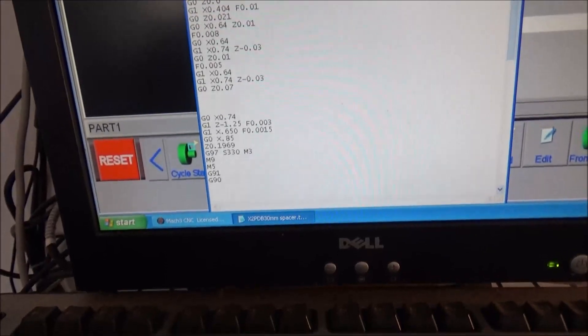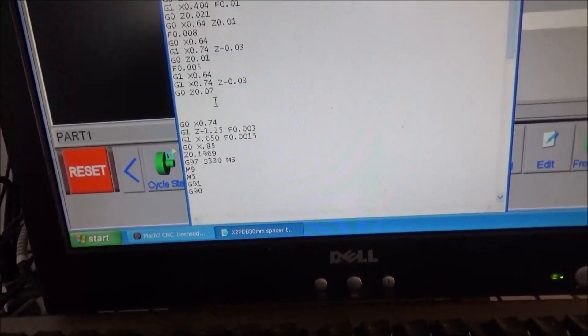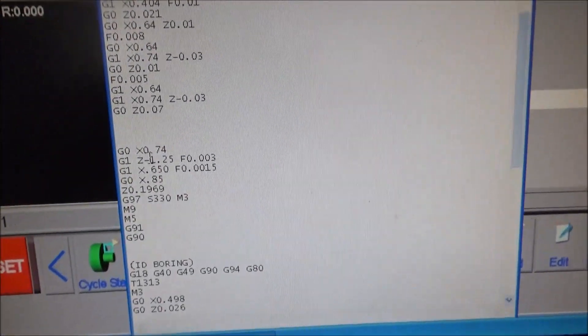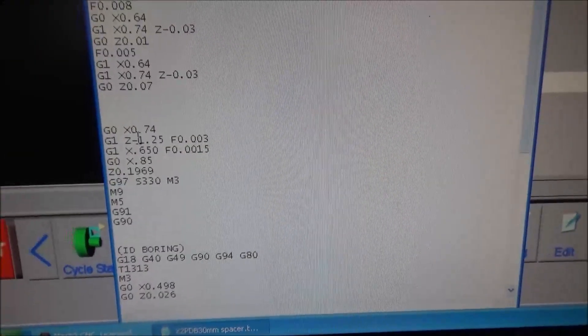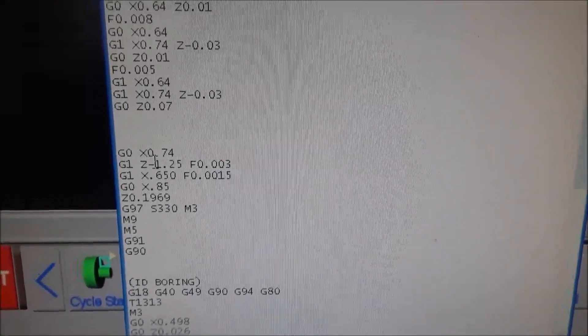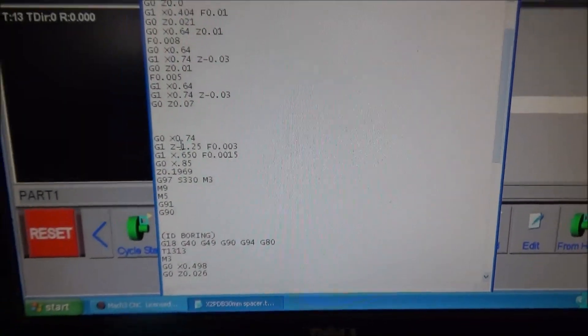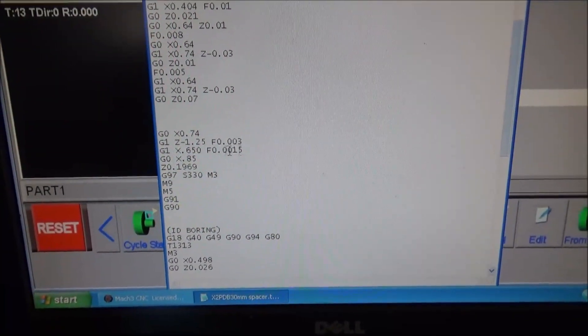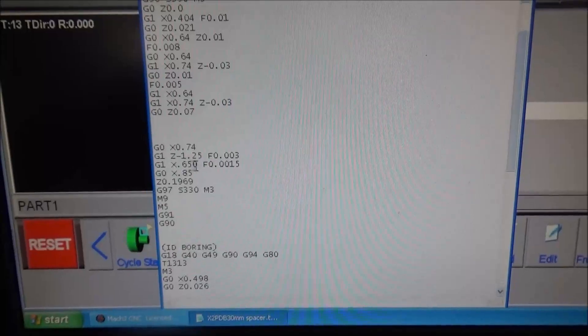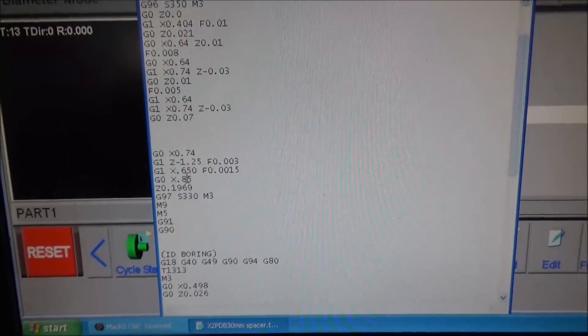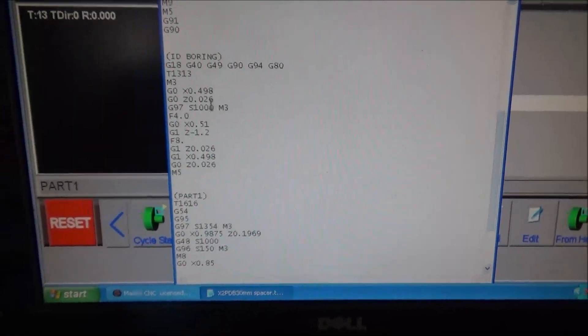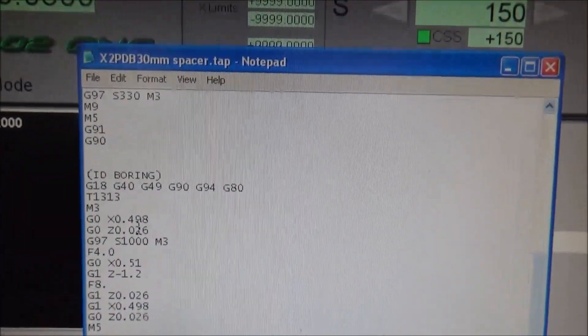So here is the facing operation and chamfer operation. And then here is our profile right here. So we're at X.74 and we go back to Z minus 1.25. Then once we get to that position, then we're going to push the cutter in to .65, which is going to give me my chamfer. Then we back out, retract. And then now we're going to do a tool change for our internal boring here.